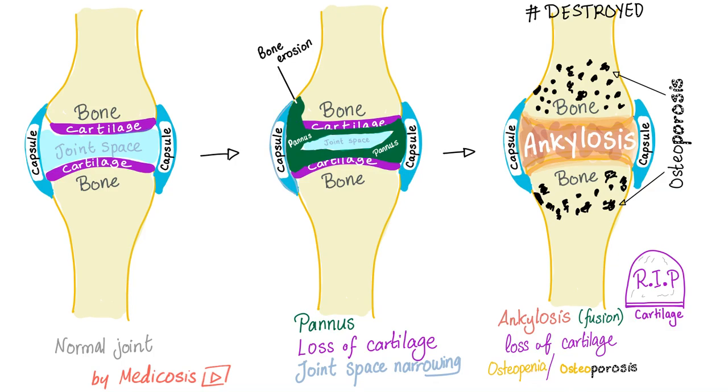Key contrast: osteoarthritis has bone growth (osteophytes); rheumatoid arthritis has bone destruction.